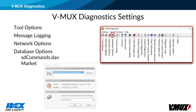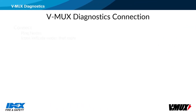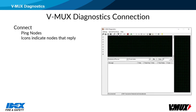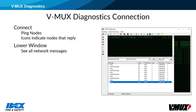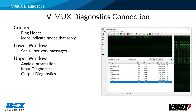Database options is used to examine information about the SD commands database, including version and release date. It is also where database market, such as fire rescue, can be selected. When you hit the connect button, it will ping the nodes and look for replies. There is an icon indication for each node that replies along the left edge of the window. It is always node 1 that sends sync and system voltage signals. Sync will be seen in the upper right corner and is used to synchronize flash patterns throughout the network. The lower window will show messages from the network. System voltage and other analog messages will be seen in analog data, shown by default in the upper window.